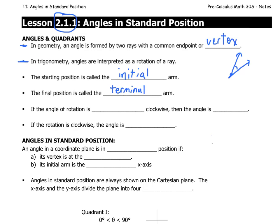If the angle of rotation is counterclockwise, then the angle is positive. If the angle of rotation is clockwise, then the angle is negative. This year, we're really going to focus on positive values of angles, and so we'll only be really considering counterclockwise angles.